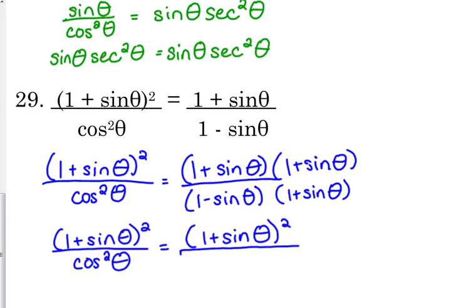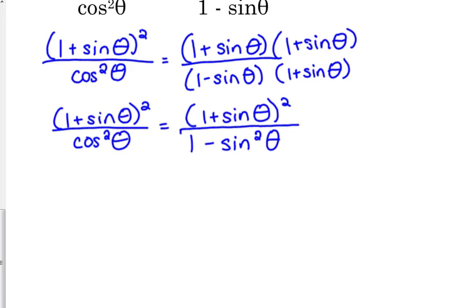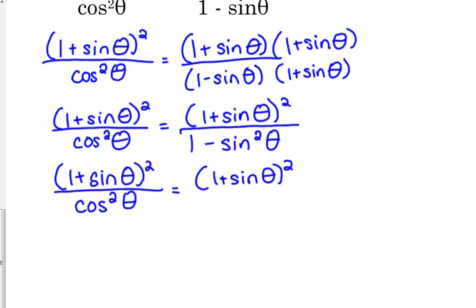And what happens when we FOIL the bottom? We get one, the outside and the inside cancel, minus sine squared of theta. What's one minus sine squared of theta equal to? Cosine squared of theta. That's a Pythagorean identity.